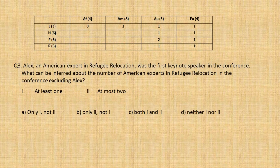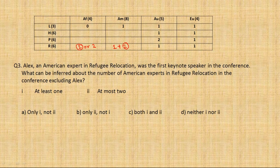Question 3: Alex, an American expert, was the first keynote speaker. What can be inferred about the number of American experts in refugee, excluding Alex? We know refugee for Africa can be either 1 or 2. If Africa's refugee is 1, America's refugee must be 2 (excluding Alex, that's at least 1 more). If Africa's refugee is 2, America's refugee is 1 (excluding Alex, that's 0 more). So minimum 1 and maximum 2 are both possible - option C, 'one or two,' is the answer.